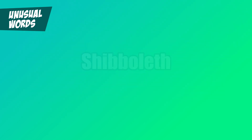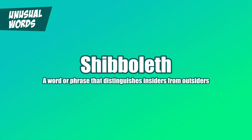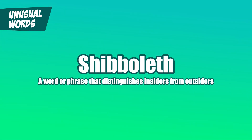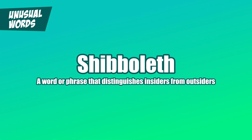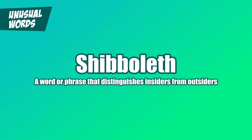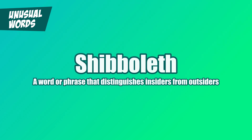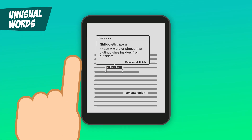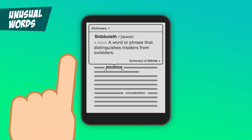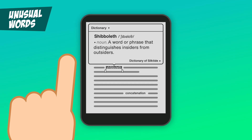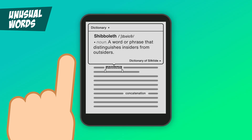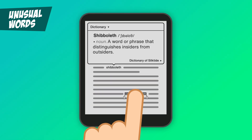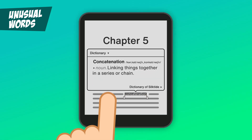Imagine you're reading and come across 'shibboleth' — a word or phrase that distinguishes insiders from outsiders. Providing a definition gives everyone a chance to understand the content without feeling left out or having to interrupt their flow to look something up. I thought about my Kindle and how I can just hold down my finger on a word to look it up on the fly without leaving the page. So if you love to use unusual words or technical jargon, think about adding a quick definition to keep everyone on the same page. And just so you know, I'm definitely keeping 'concatenation' — linking things together in a series or chain.